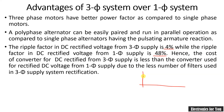The ripple factor refers to the AC component present in a DC supply. A pure DC supply has no ripple, but in practice some AC components are present in the DC output. In case of a three-phase supply the ripple is very very less, whereas in case of single-phase DC it is much more — around 48 percent — making the output more pulsating in nature.